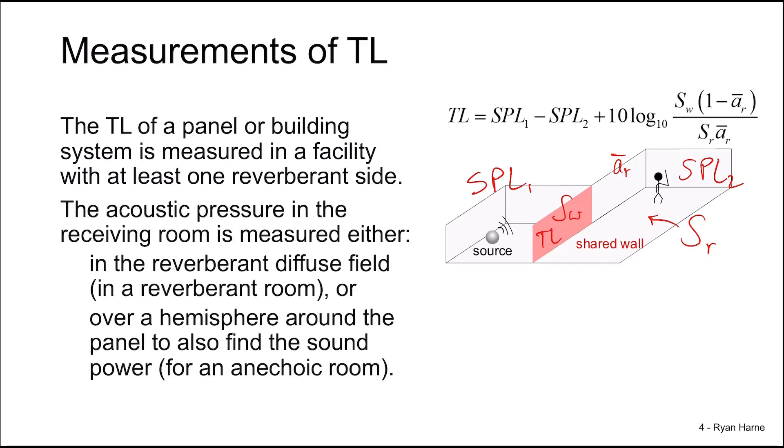The acoustic pressure in the receiving room is measured in different ways based on the characteristics of the receiving room. Certain facilities will use either a receiving room that's reverberant or a receiving room that's anechoic. In a reverberant receiving room, we just measure the diffuse field sound pressure level in the room. But if the receiving room is anechoic, we will take a hemisphere around the panel to measure the sound power.